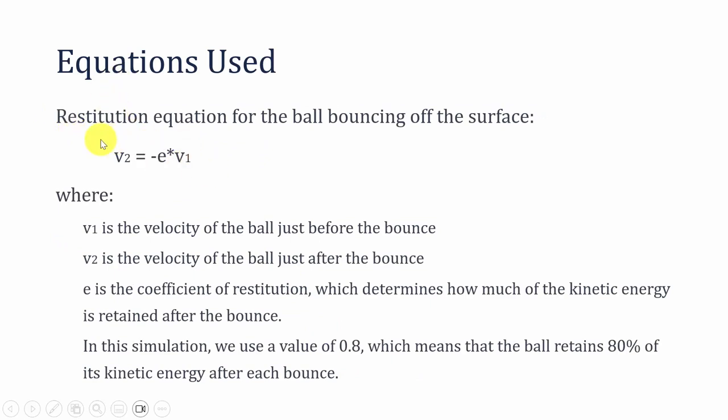The third equation I have used is the restitution equation for ball bouncing off surface: v2 equals minus e times v1. Here v2 is the velocity of the ball after the bounce and v1 is the velocity of the ball before the bounce. e is the coefficient of restitution which determines how much kinetic energy is retained after the bounce. In this case I have used e as 0.8, which means that 80 percent of the kinetic energy is retained after the bounce.